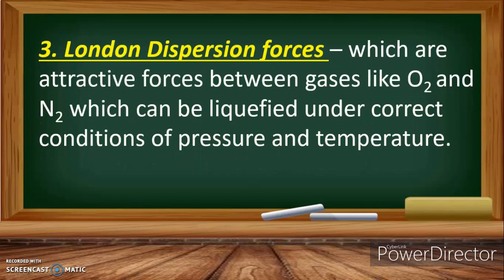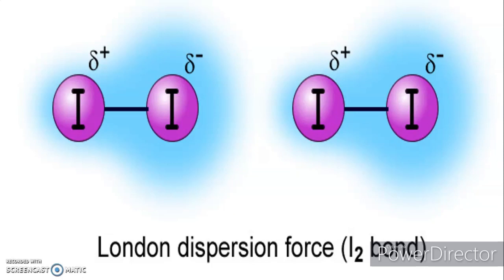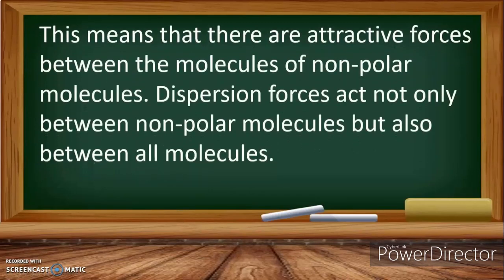London dispersion forces are attractive forces between gases like oxygen and nitrogen, which can be liquefied under correct conditions of pressure and temperature. An example of London dispersion forces is between iodine atoms. Iodine is diatomic, as are the other halogen atoms. This means there are attractive forces between the molecules of non-polar molecules. Dispersion forces act not only between non-polar molecules but also between all molecules.